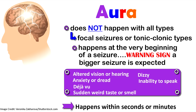The aura phase is not experienced by all patients. Those who tend to have an aura are patients with focal seizures or tonic-clonic seizures. It happens within seconds or minutes before the seizure — different from the prodromal, which happens days before. The aura is a warning sign that a bigger seizure is expected.